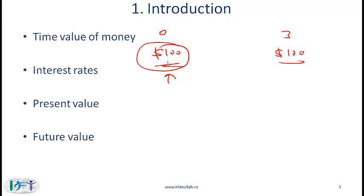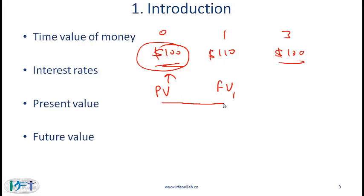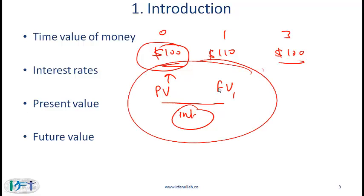The money today, or the value today, is called the present value. At times this could be an investment which you make at time 0. The value at a future point in time is called the future value. If you are indifferent between $100 today versus $110 after 1 year, this $110 is referred to as the future value at the end of year 1. The relationship between present value and future value is established through an interest rate.